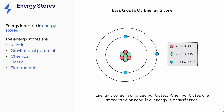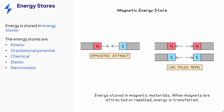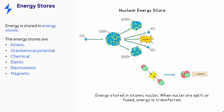Energy is stored in the electrostatic energy store of charged particles. When those charged particles are attracted to or repelled by other charged particles, energy is transferred. Energy is stored in the magnetic energy store of magnets and magnetic materials. When magnets are attracted to or repelled by other magnets, energy is transferred. Energy is stored in the nuclear energy store of atomic nuclei. When nuclei are split in nuclear fission, energy is transferred, and when nuclei are joined in nuclear fusion, energy is transferred.